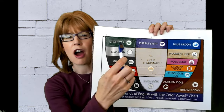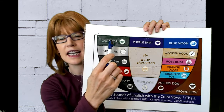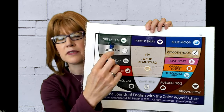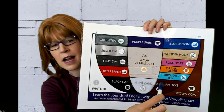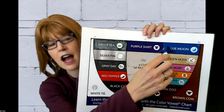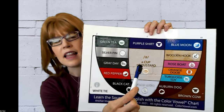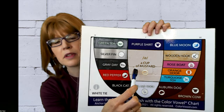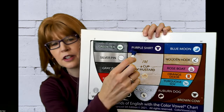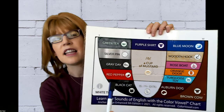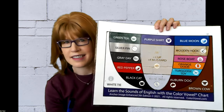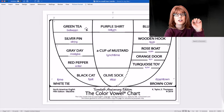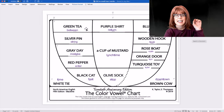The pathway starts at the top: Green T. It moves down and around and up, then up through the center, finishing up with the two sides. Green T. Between.